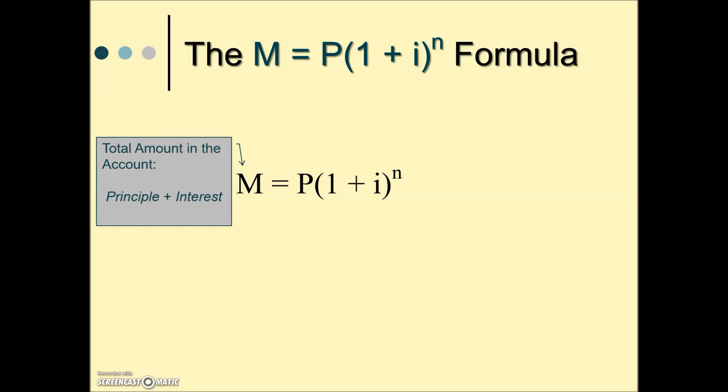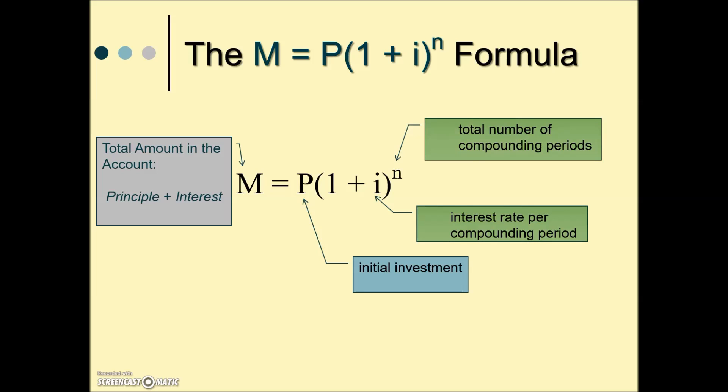We're going to identify the parts of our compound interest formula, and here is the compound interest formula: M = P(1 + i)^n. M is the maturity amount, the principal plus the interest. P is your initial investment, the principal. i stands for the interest rate per compounding period, and n is the exponential power representing the total number of compounding periods.